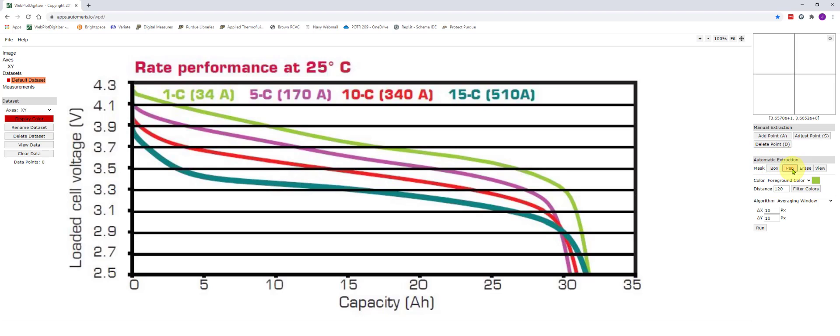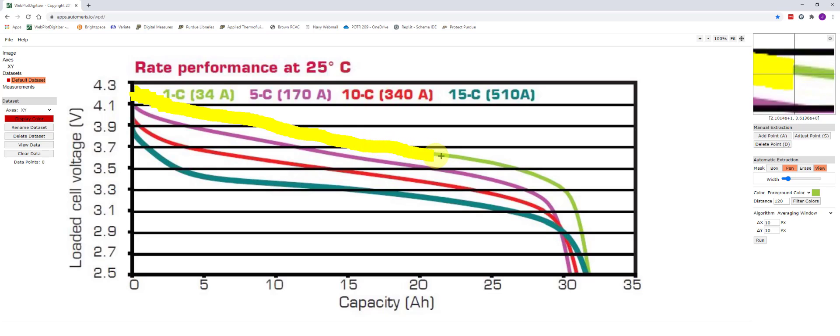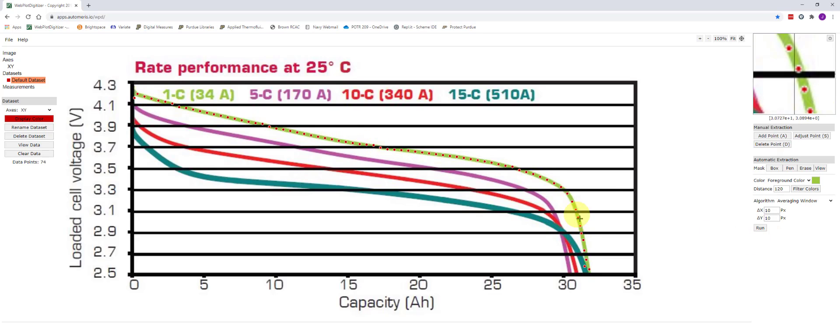And in the automatic extraction menu I'm going to click on pen. I can adjust the width of my pen if I need to. And I'm going to highlight only the green area. I'm going to ignore the other curves. But I'm going to use this highlighter or pen tool to cover the curve of interest. And when I'm ready I'm going to click run after setting the algorithm averaging window. If you select larger values the data points will be spaced farther and farther apart. 10 pixels is usually a good starting point. And if I click run it will automatically extract data.